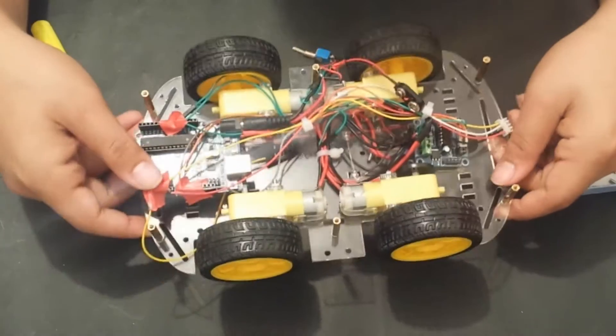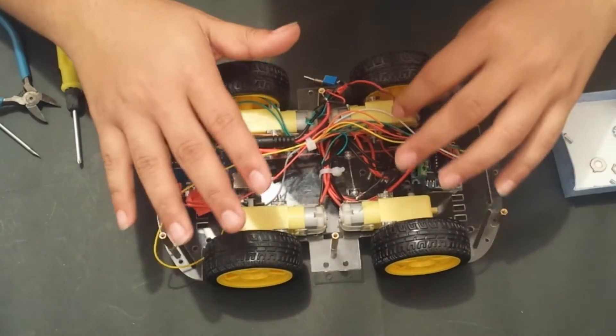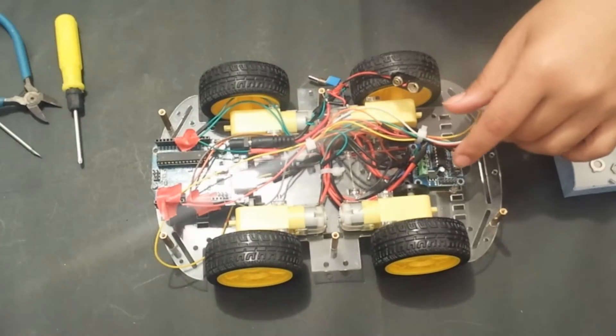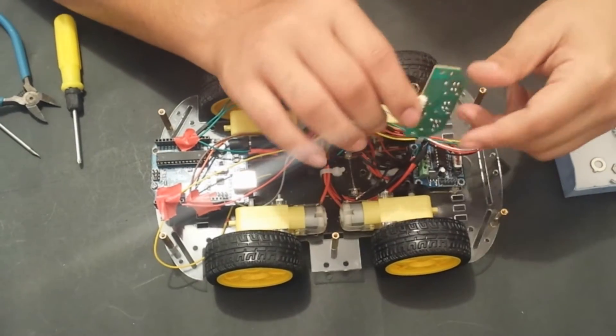And now that the top is off, we are free to work on the wiring of the line following sensor. The first thing I am going to do is I will mount the line following module.